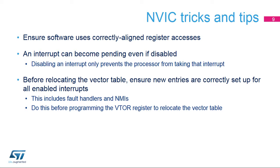An interrupt becomes pending when the source asks for service. Disabling the interrupt only prevents the processor from taking that interrupt. Make sure the related interrupt flag is cleared before enabling the interrupt vector. Before relocating the vector table using the VTOR register, ensure that fault handlers, NMI, and all enabled interrupts are correctly set up on the new location.